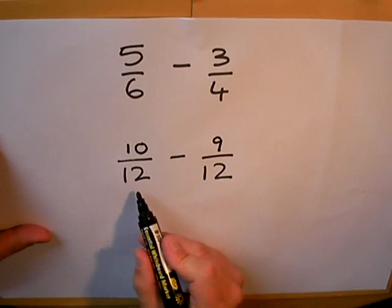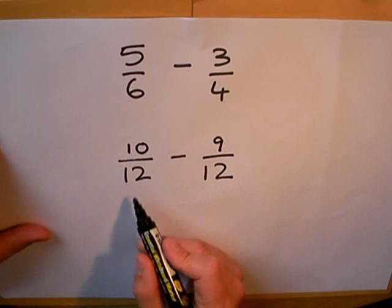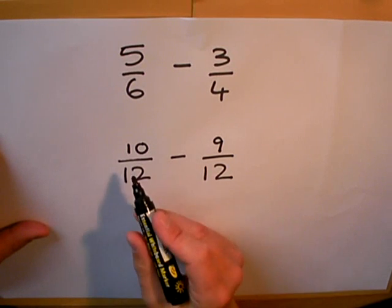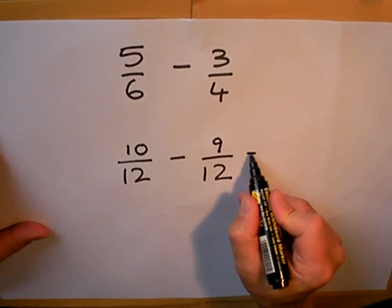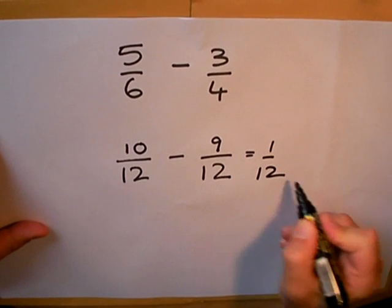Now I've turned the two fractions into the same kind of fraction I can go ahead with my subtraction, and of course 10 take away 9 is 1. So I have 1 twelfth as my answer.